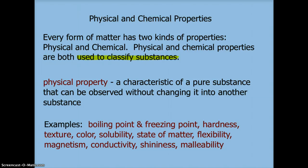Physical and chemical properties. Every form of matter has two kinds of properties. They can either be physical or chemical. Physical and chemical properties are used to classify substances, and otherwise we can categorize substances by their properties.